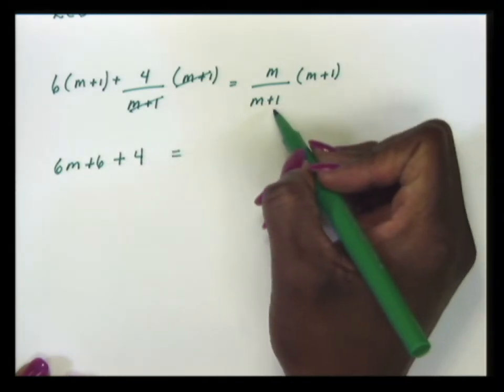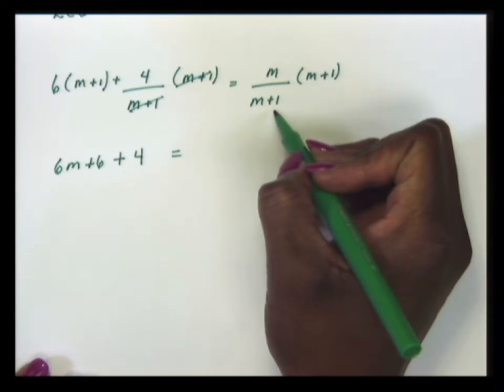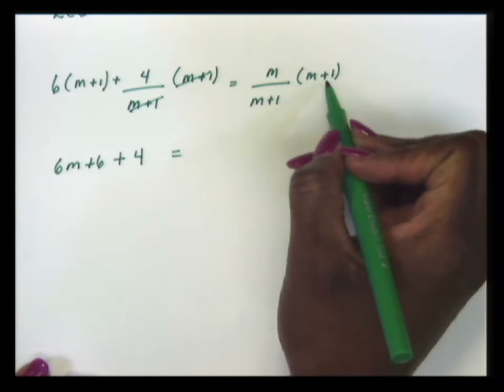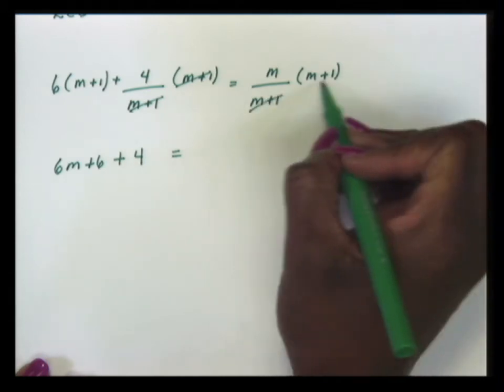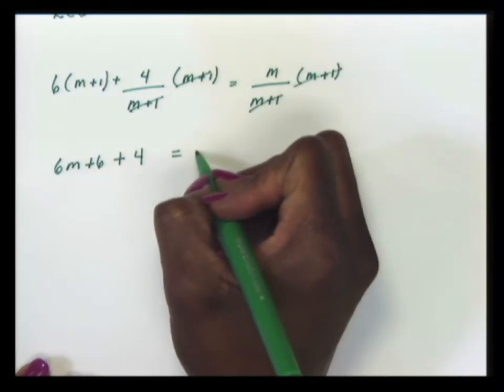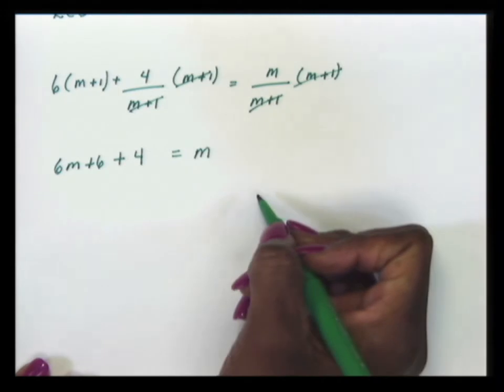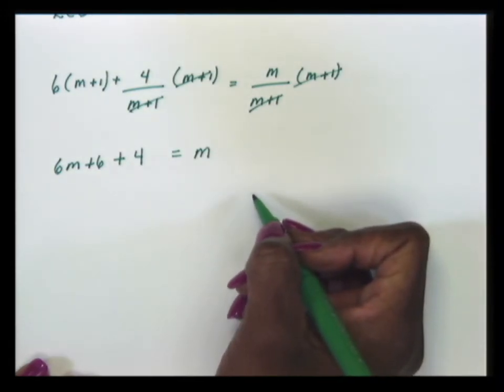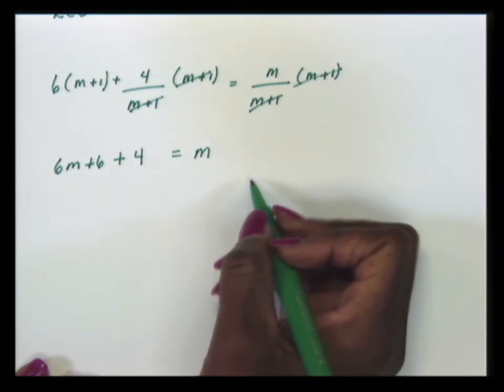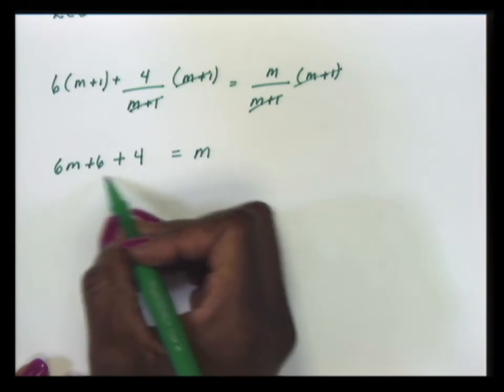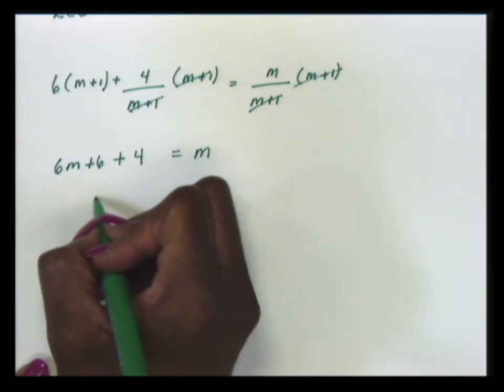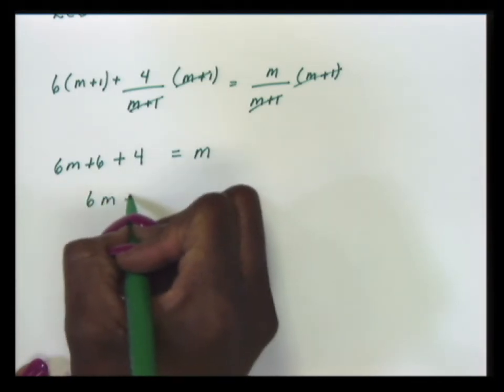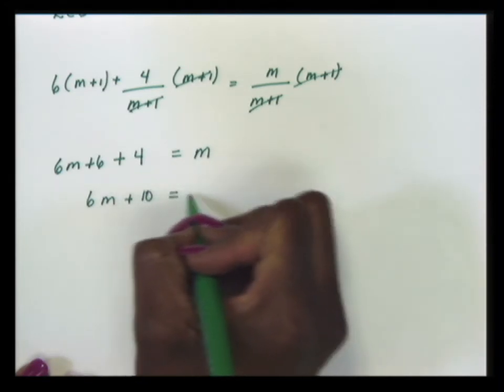The same thing happens on the right-hand side. We have a denominator of m plus 1 and we're multiplying by m plus 1. So the m plus 1s cancel. The right-hand side, we have m. To solve the equation, we will now combine our like terms. On the left, we have 6m plus 10 and it's equal to m.